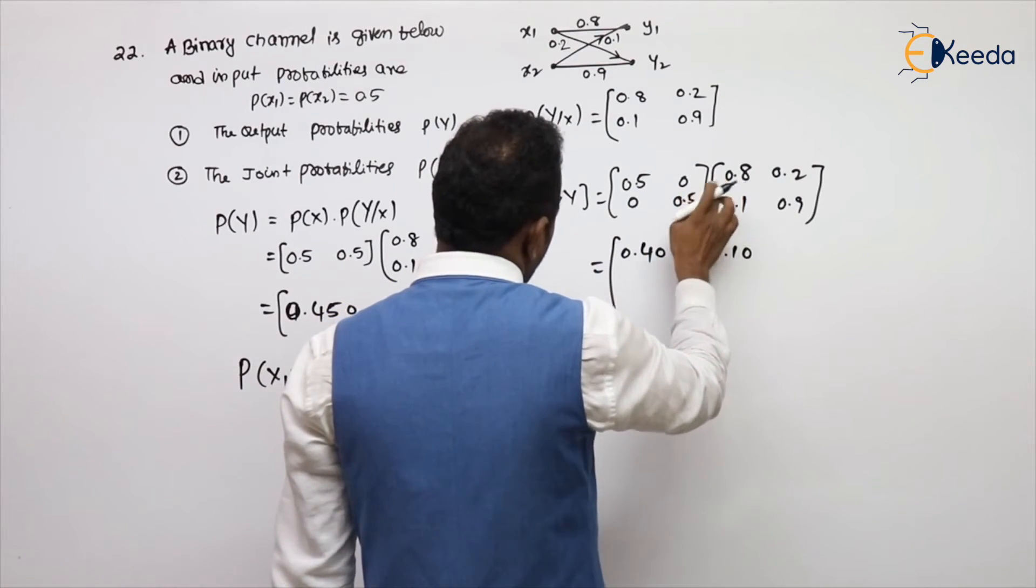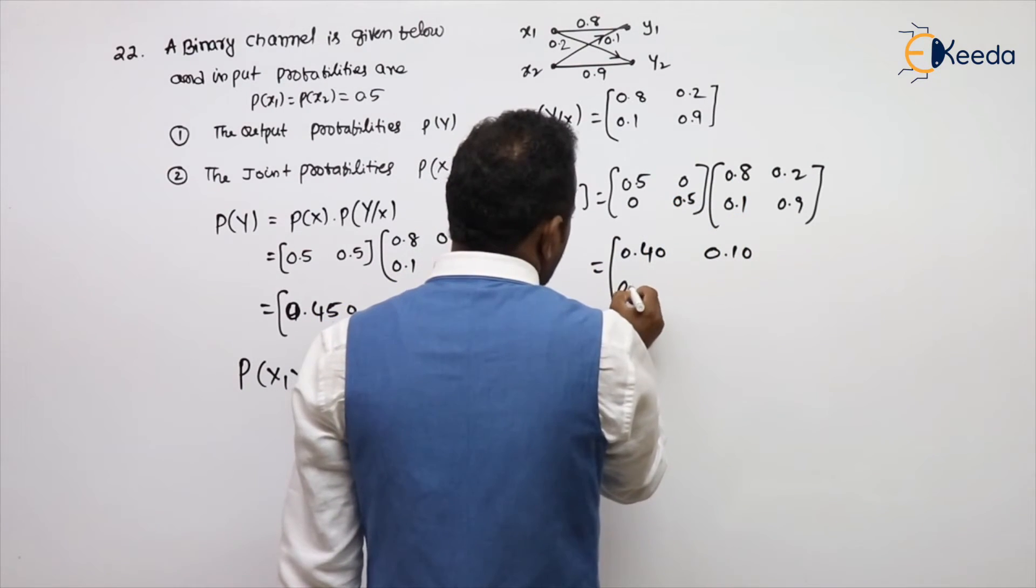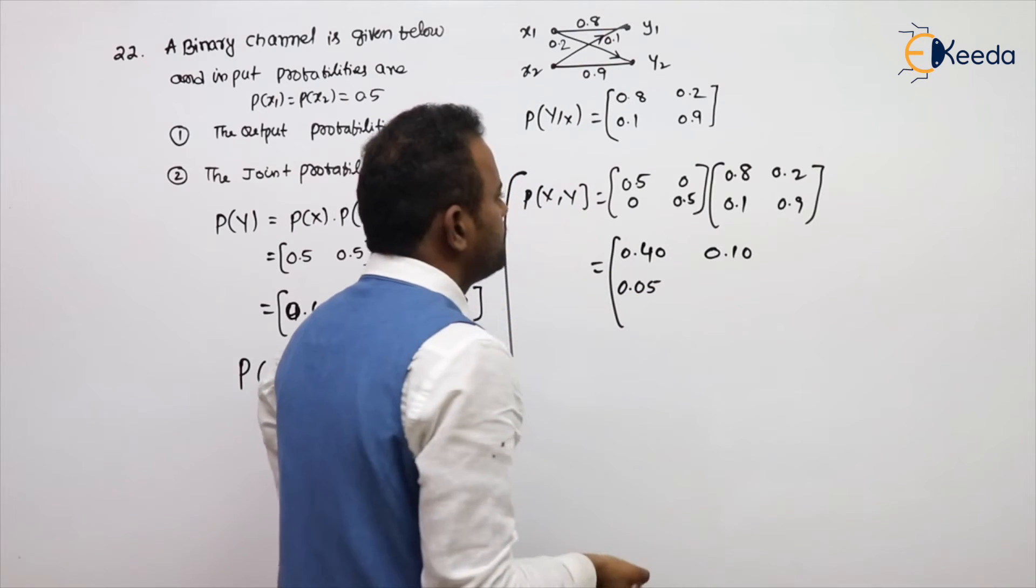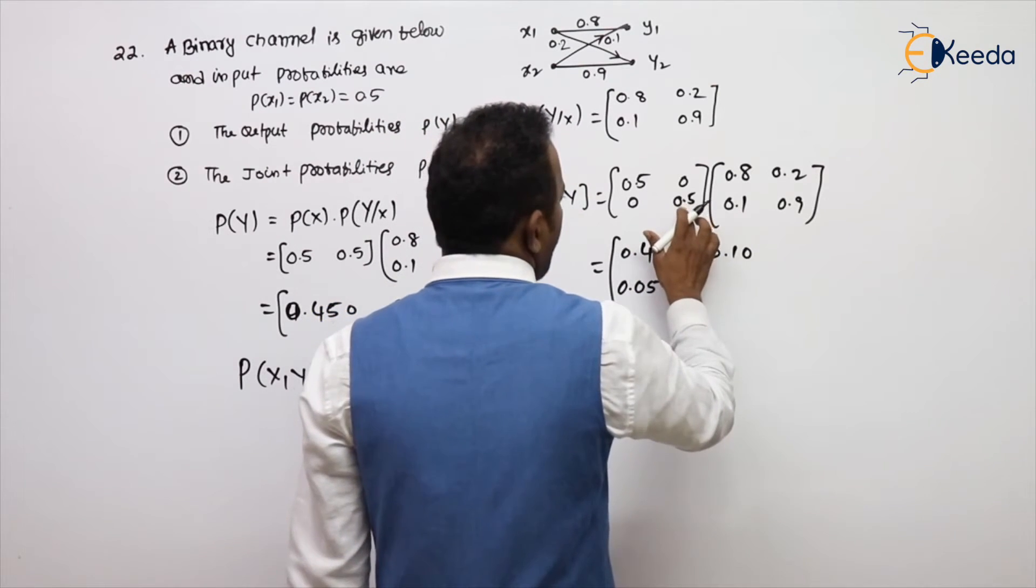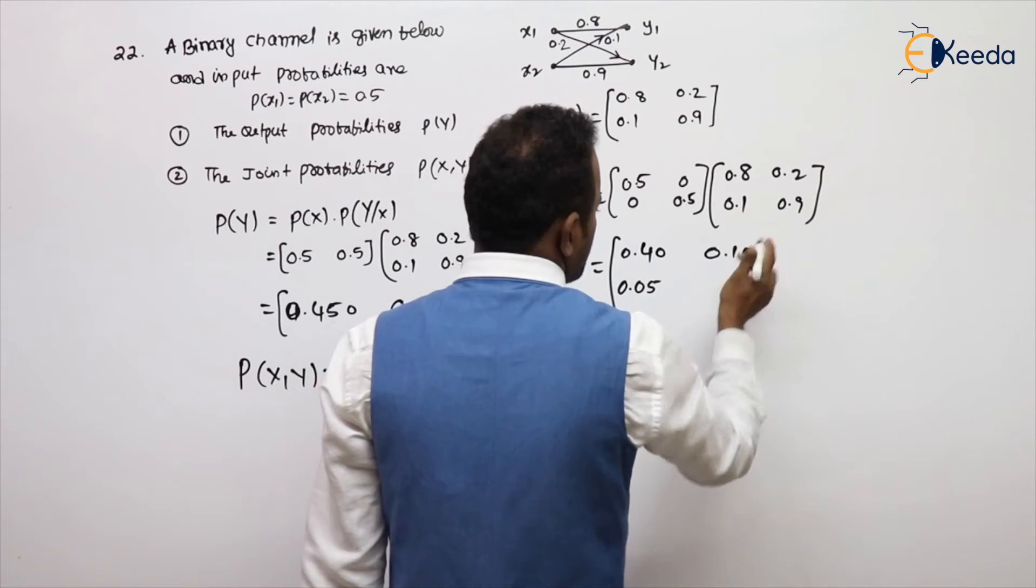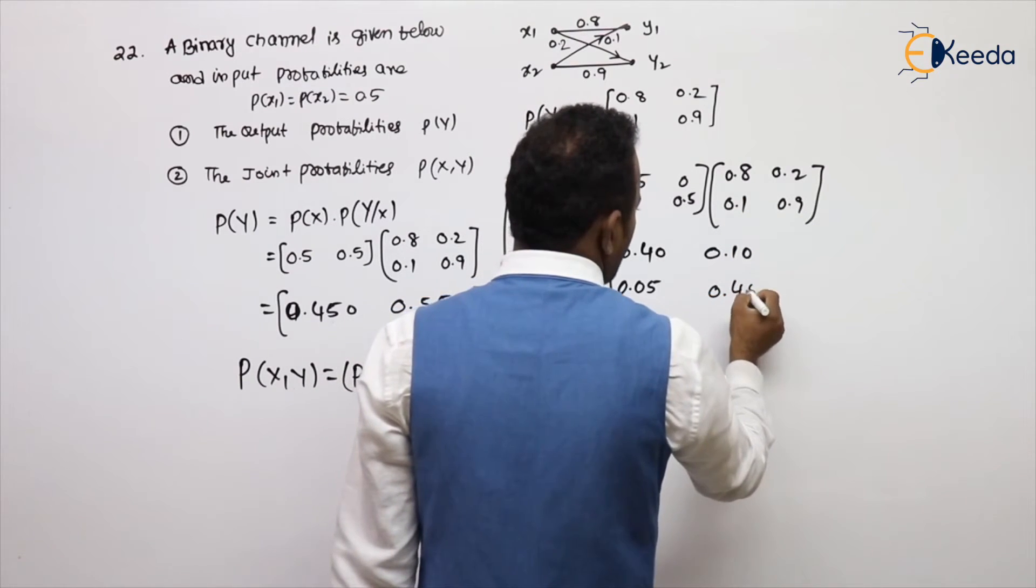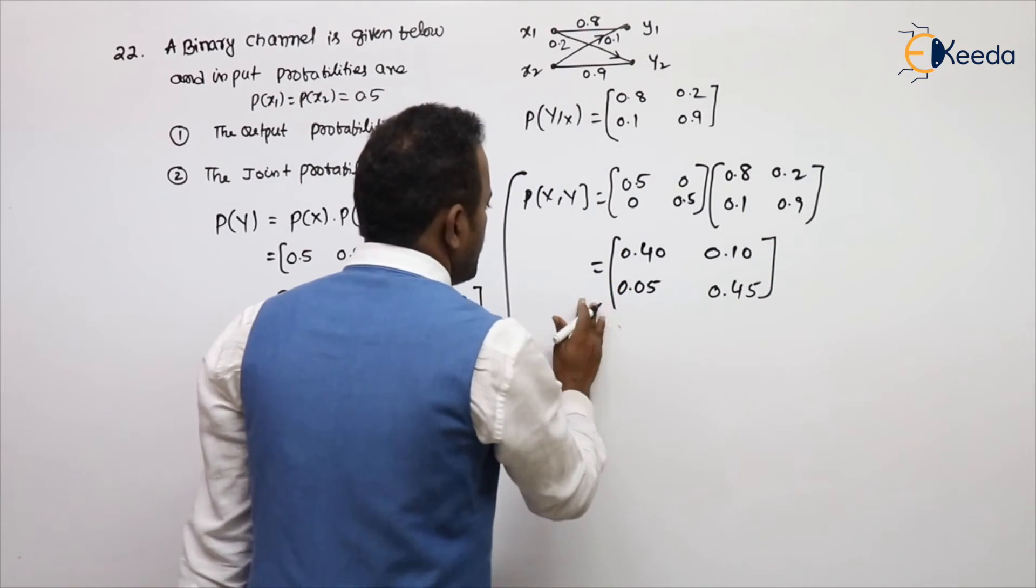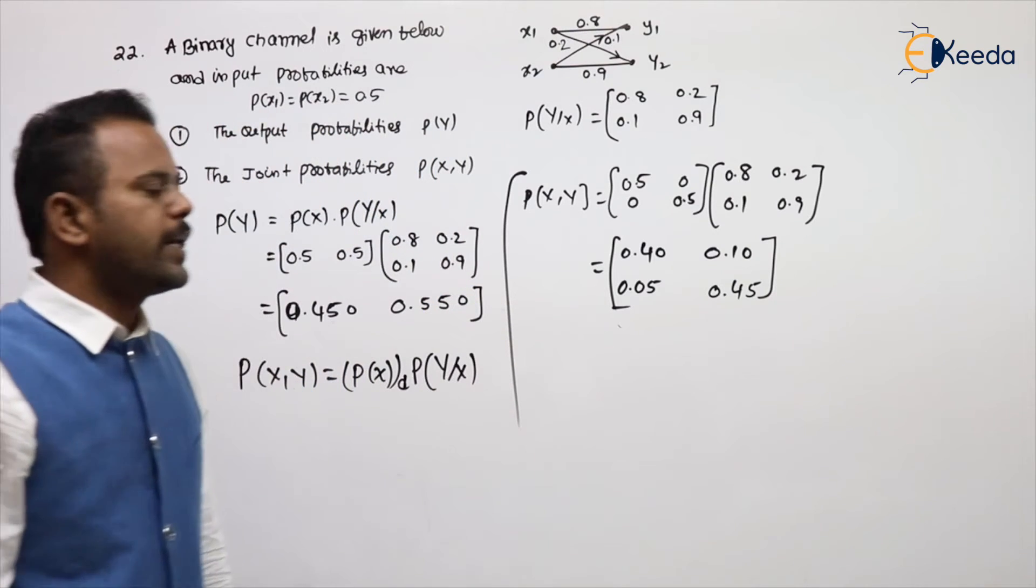This into this, 0 plus this into this, 0.05. Next, this into this 0, 0.10, and this into this, so 0.45. That is the joint probability matrix.